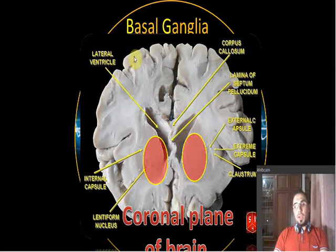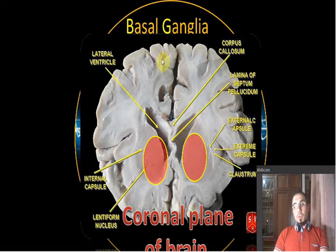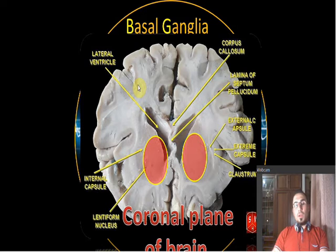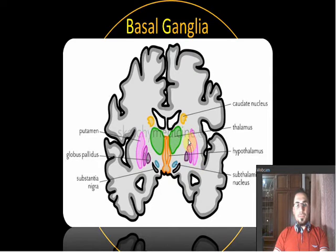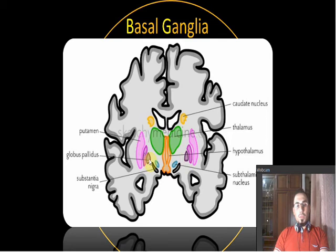Action potentials start in the cell bodies here in the premotor or motor area, and fibers carry information back through the body. Sensory fibers also bring information to the sensory cortex. In this labeled diagram, you can see the caudate nucleus, lateral ventricle, third ventricle, hypothalamus, thalamus, subthalamic nucleus, substantia nigra, putamen, and globus pallidus. The most reported structures in pathology are the substantia nigra and subthalamic nucleus.